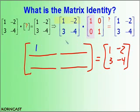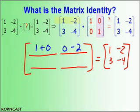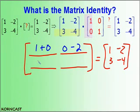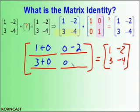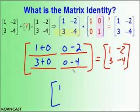Row 1, column 1: 1 times 1 is 1, negative 2 times 0 is 0, added together. Row 1, column 2: 1 times 0 is 0, negative 2 times 1 is negative 2. Row 2, column 1: 3 times 1 is 3, negative 4 times 0 is 0, added together. Row 2, column 2: 3 times 0 is 0, negative 4 times 1 is negative 4.